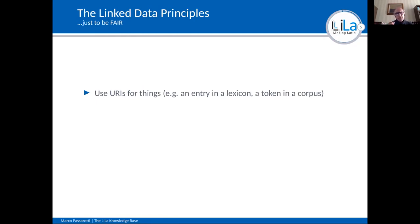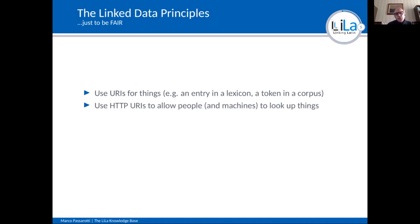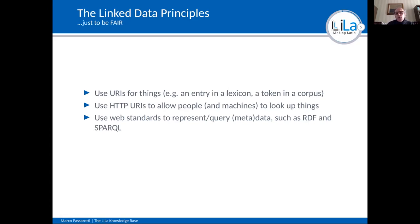What are the principles? They are very simple. First of all, use URIs — Uniform Resource Identifiers. Uniform Resource Identifiers are in some way the genetic code that identifies something uniquely. The things in our world are entries in a lexicon, tokens in a corpus. So each element in the knowledge base is assigned a unique ID. Then you use HTTP URIs to allow people and machines to look up things. Then you use web standards like RDF and SPARQL to represent and query data and metadata.